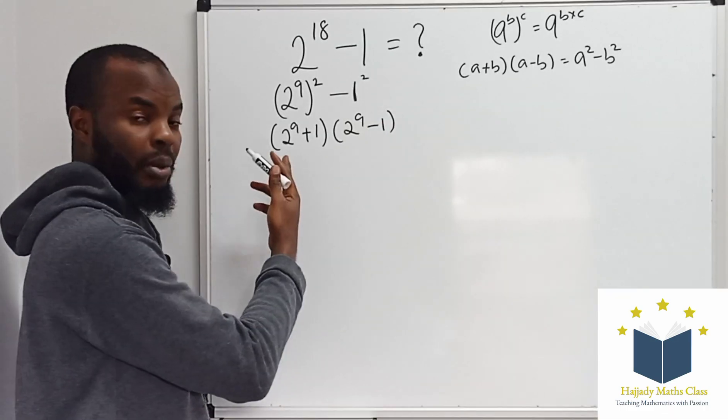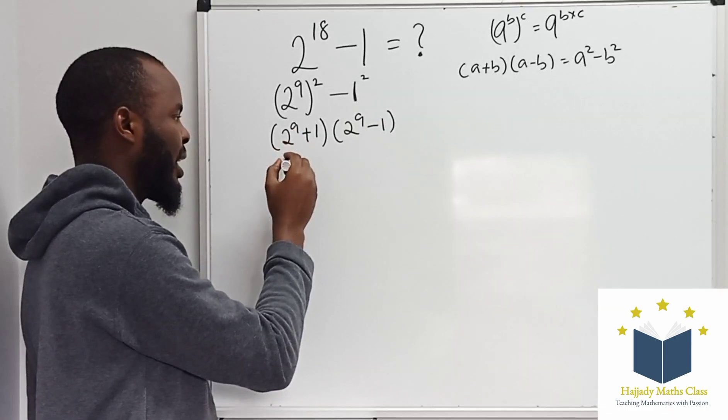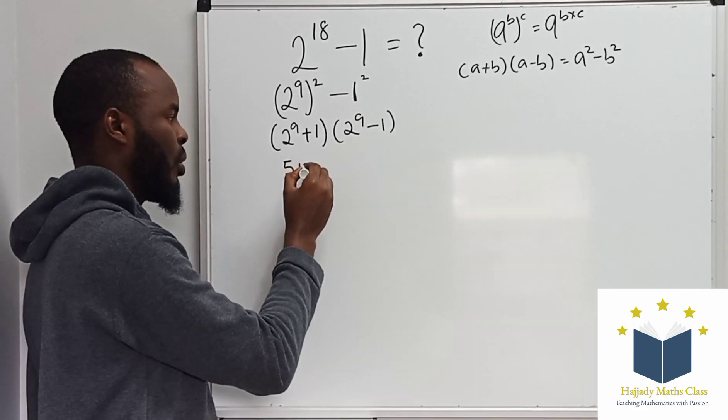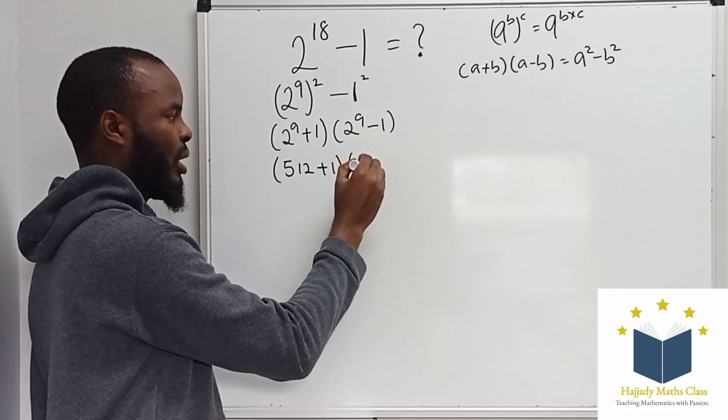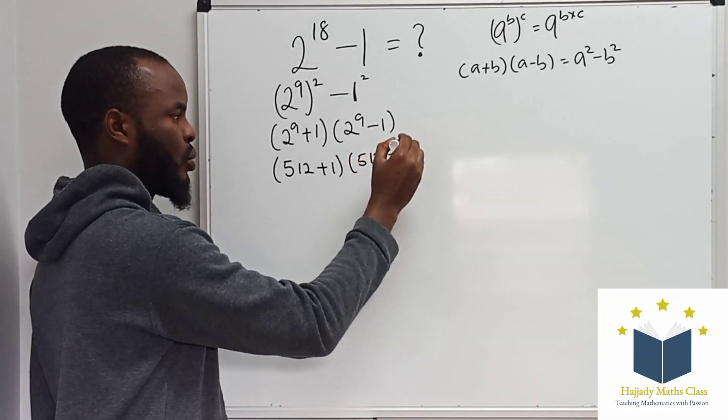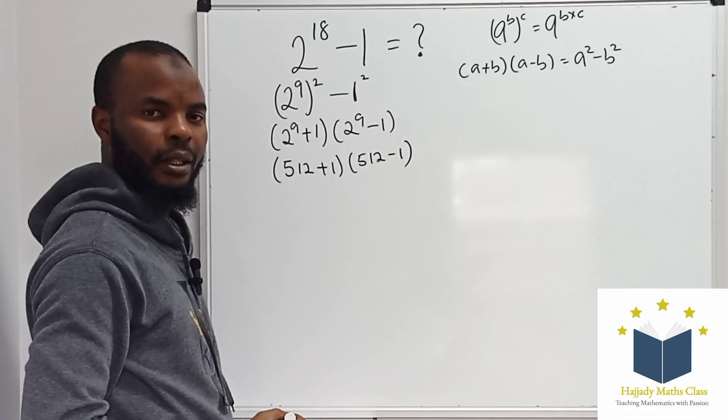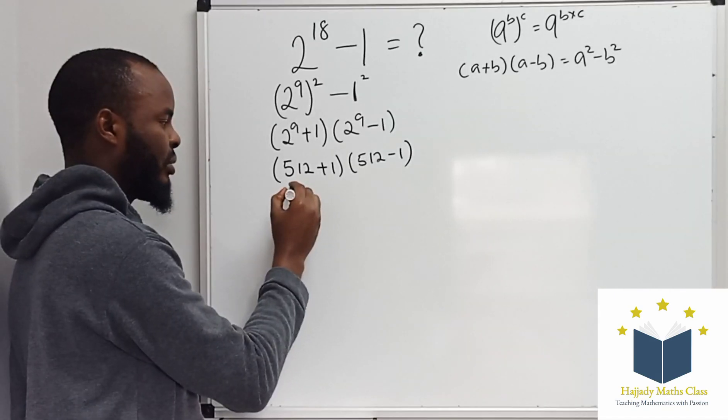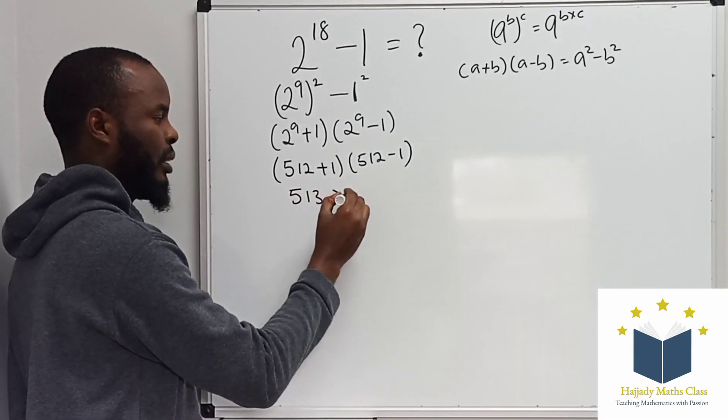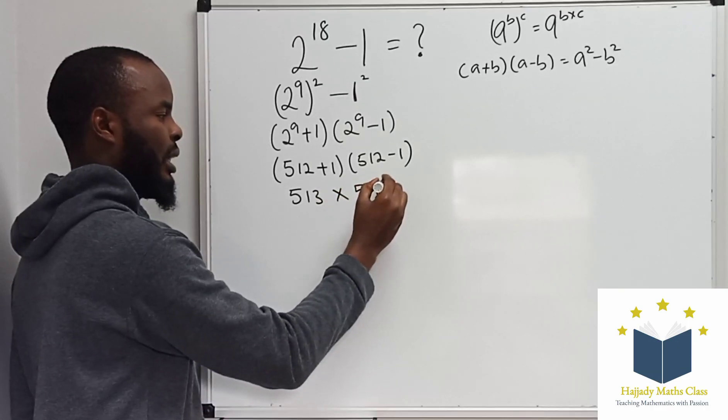So it's very easy to know 2 to the power of 9. 2 to the power of 9 is the same thing as 512 plus 1, times 512 minus 1. Now, 512 plus 1 gives 513 multiplied by 511.